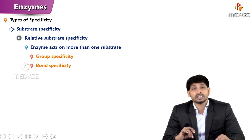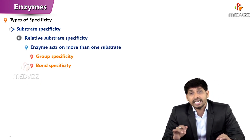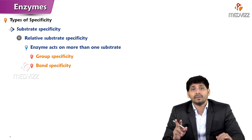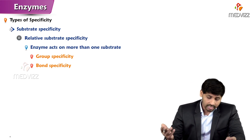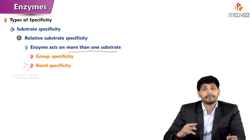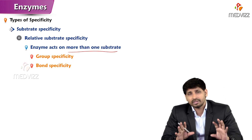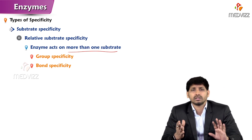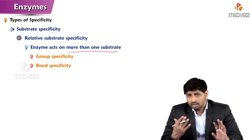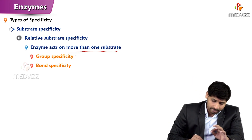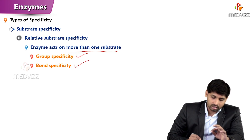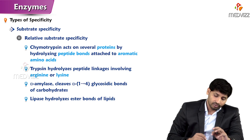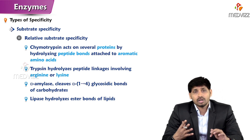Relative substrate specificity means enzymes act on more than one substrate, but the substrates are closely related. It is of two types: group specificity and bond specificity. A good example is digestive enzymes — when you consume protein-rich food, that protein has to be broken down, and there are many different proteins like collagen and elastin.